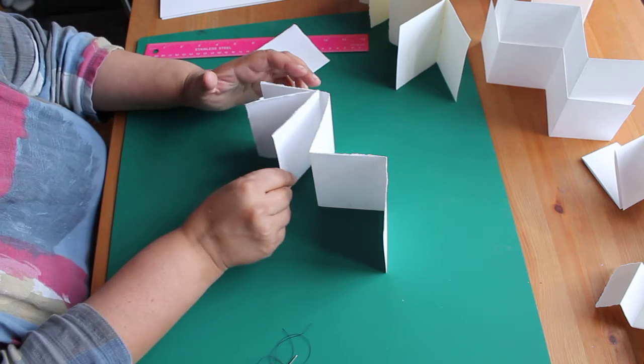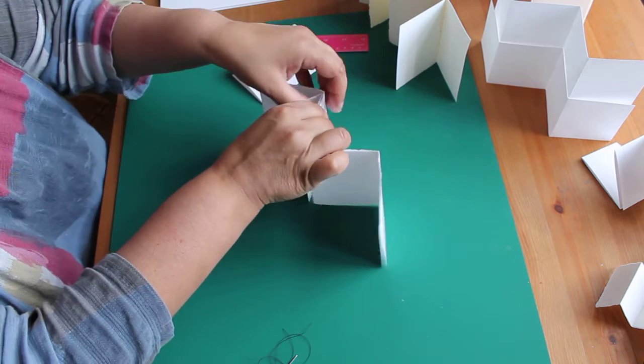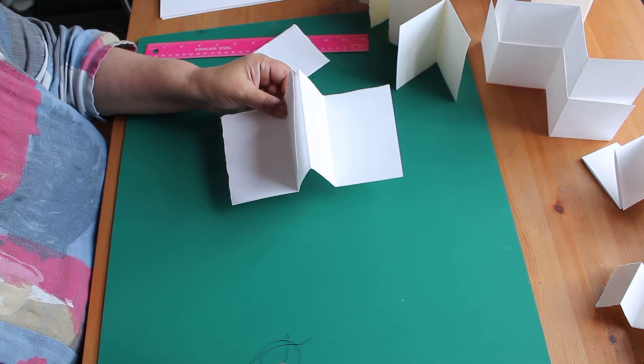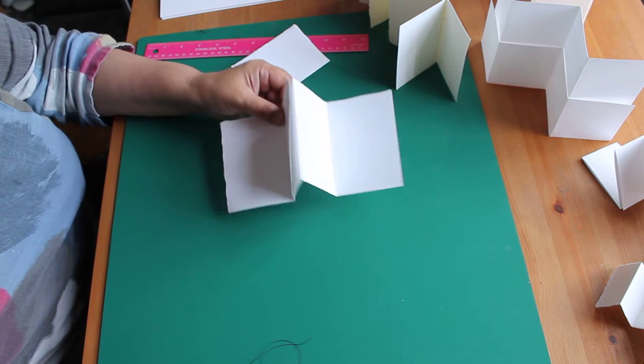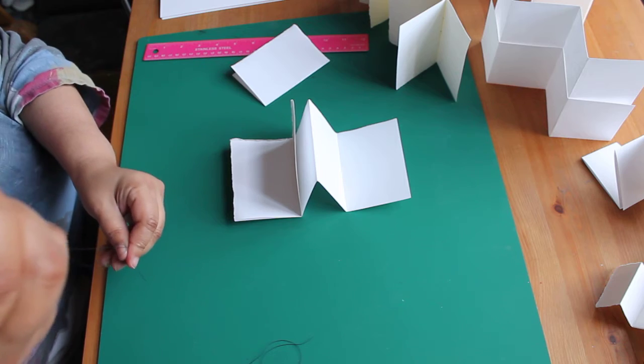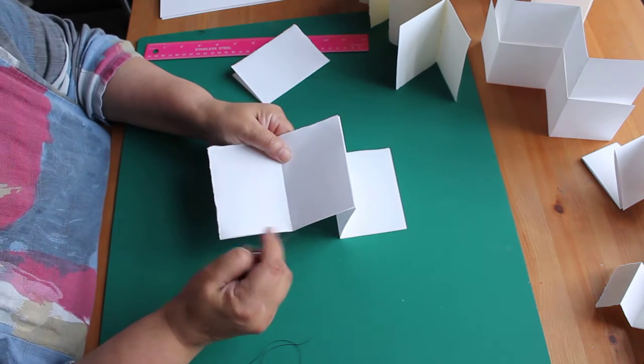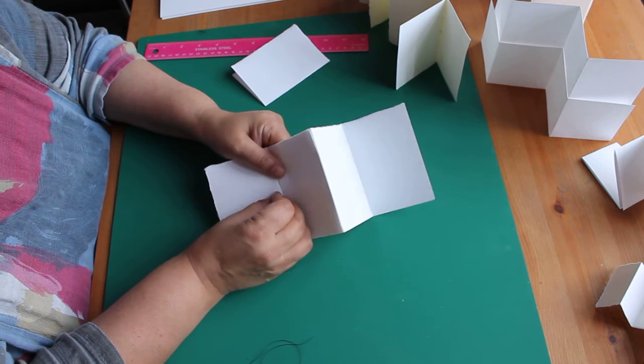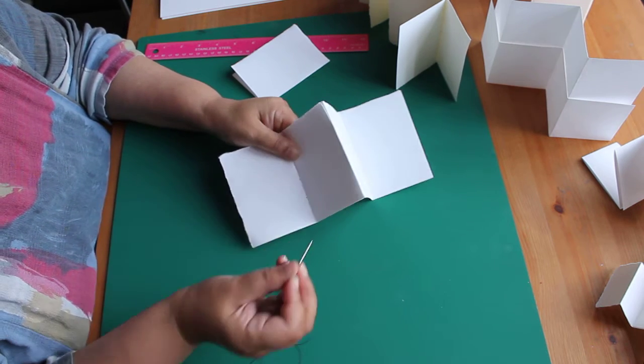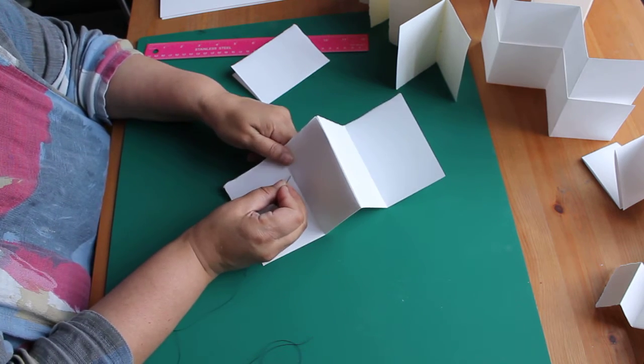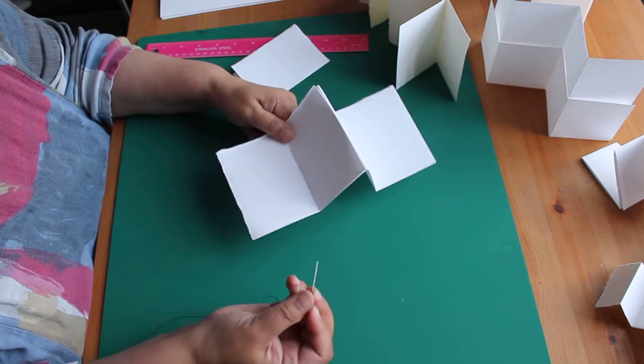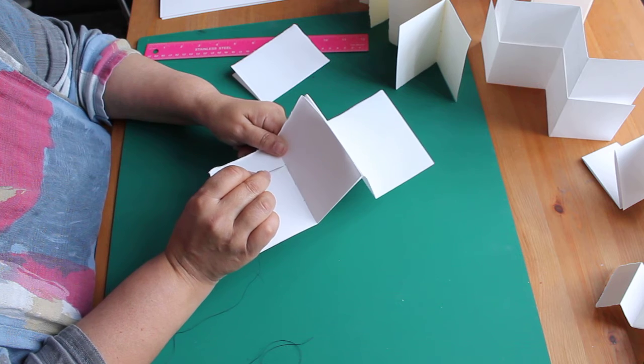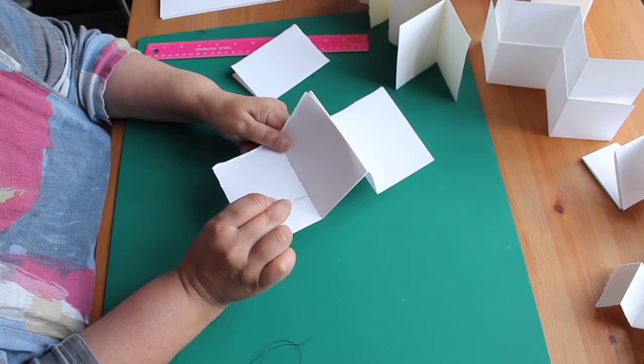So we'll push that one into that fold there. We'll do another pamphlet stitch. So again we're going to make those three holes. One in the middle. One halfway. Another halfway between the middle and the other edge. Like so. So one, two, three.